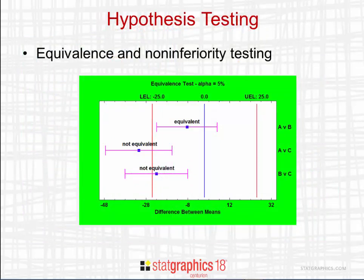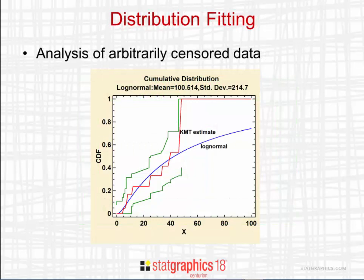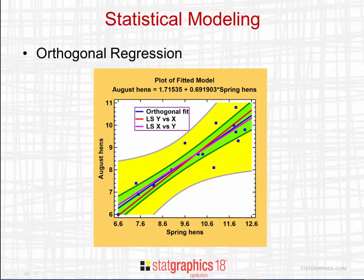The new statistical procedures we've added include an equivalence and non-inferiority testing procedure, used to demonstrate that two means are essentially equivalent to each other. There's a new distribution fitting procedure which can fit a distribution to data with any combination of left-censored, right-censored, and interval-censored data. The orthogonal regression procedure fits a linear or non-linear model to data with error in both the X and Y variables.